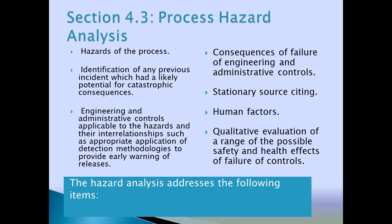Continuing with the Process Hazard Analysis, you're going to figure out the consequences of failure of any one of these systems — engineering, administrative, or PPE — and then account for all factors involved: human factors, equipment factors. The team is going to analyze what can go wrong, where it would go wrong, what human factors can go wrong, and then you're going to do a qualitative evaluation of the full range of safety and health effects if your controls fail.